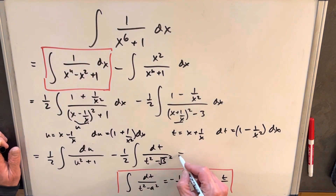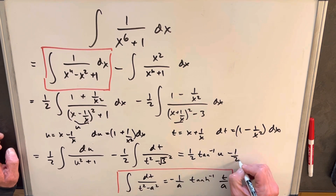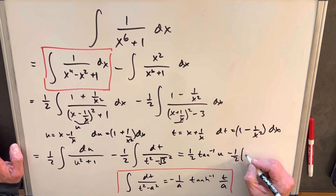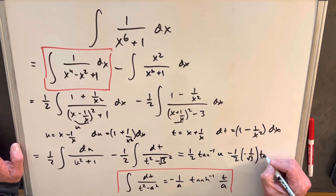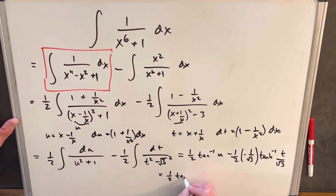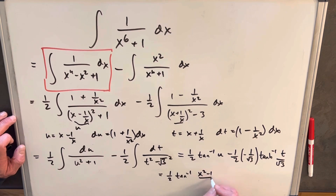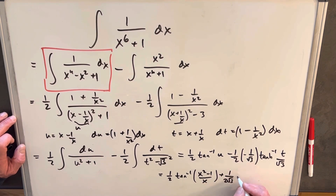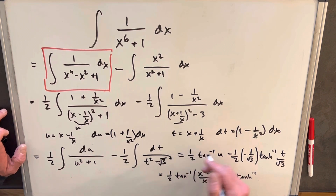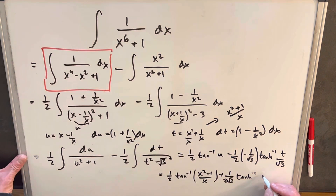Integrating: the first piece gives 1/2 arctan of u, and the second piece uses the tanh inverse formula, giving minus 1 over square root of 3 times tanh inverse of t over square root of 3. Cleaning this up: we get 1/2 arctan of u — where u is x minus 1/x, rewritten with common denominator as (x squared minus 1)/x — and then plus 1 over (2 square root of 3) times tanh inverse of (x squared plus 1) over (x times square root of 3). That's our red piece going into the full answer.